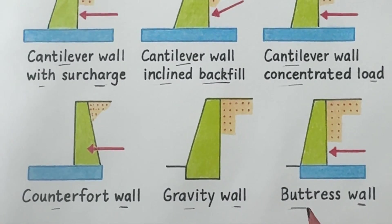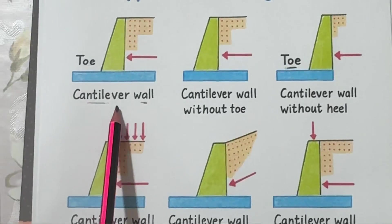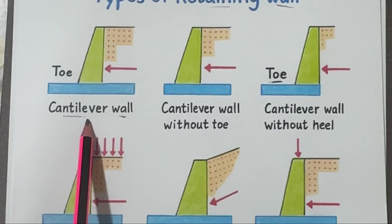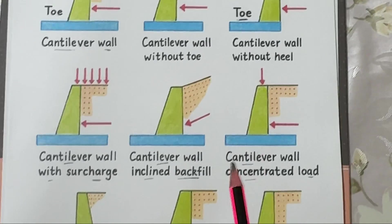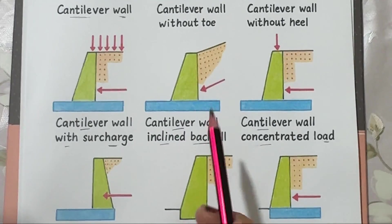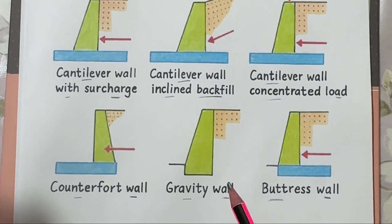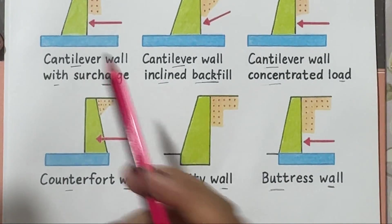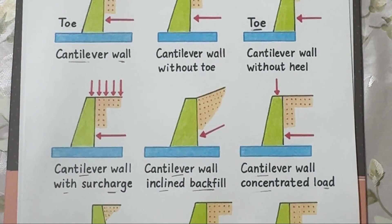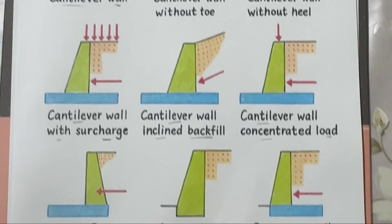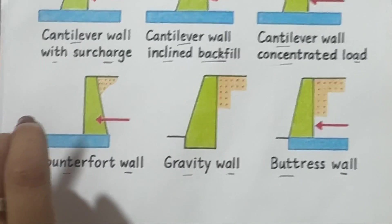In summary: cantilever walls are the most common for medium heights. Counterfort and buttress walls are for very tall or heavily loaded cases. Gravity walls are old school but still reliable for short heights. Each type depends on the site conditions, available space, and load requirements.